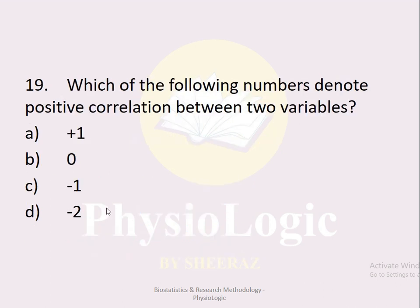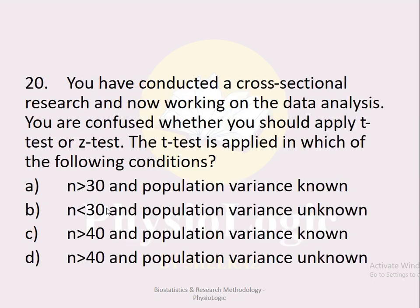MCQ number nineteen: Which of the following numbers denotes positive correlation between two variables? Option a plus 1, option b 0, option c minus 1, option d minus 2. The correct option is option a, plus 1. Plus 1 denotes positive correlation, 0 denotes no correlation, and minus 1 denotes negative correlation between two variables.